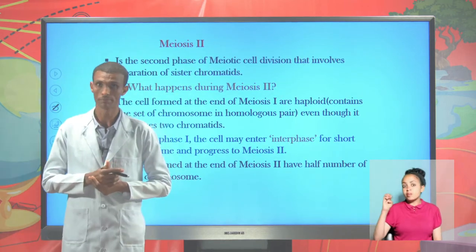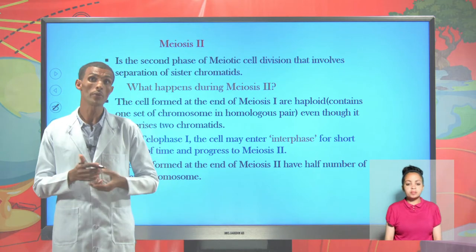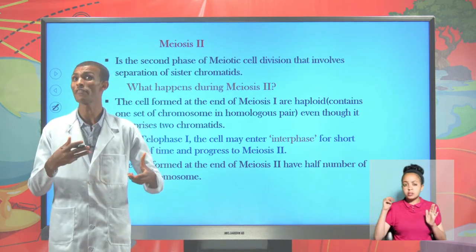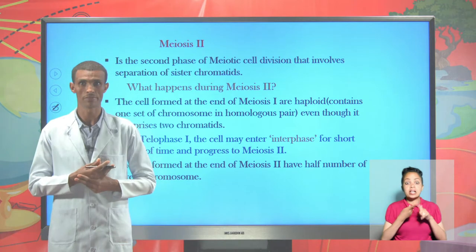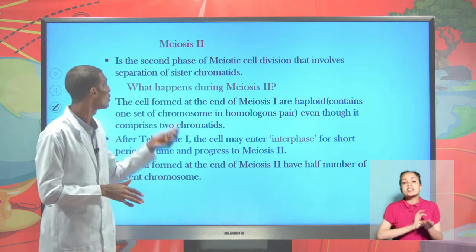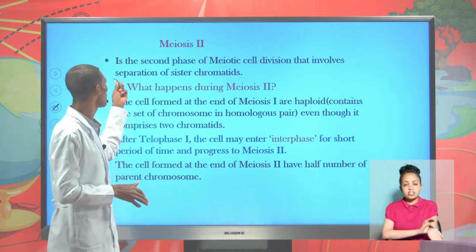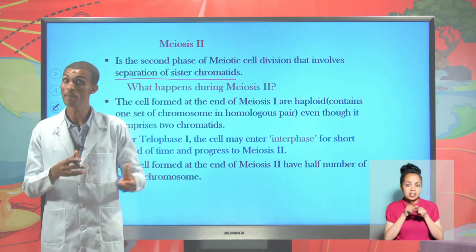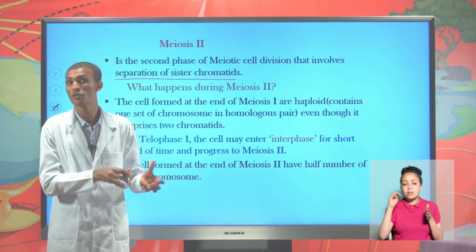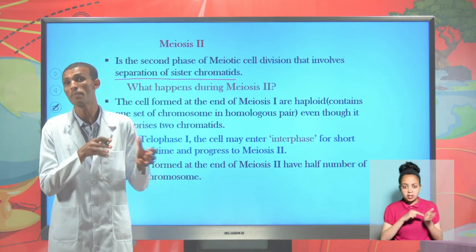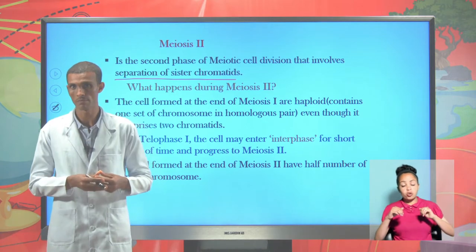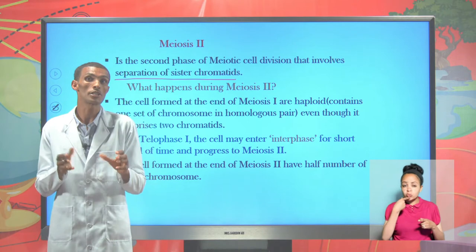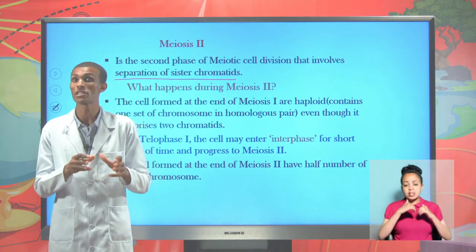Meiosis II is the second phase of meiosis cell division that involves the separation of sister chromatids. When we say meiosis I, it involves the separation of homologous chromatids. But here, we are going to speak about the separation of sister chromatids.